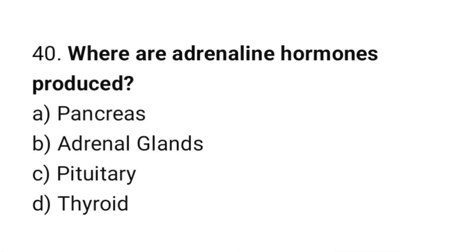Question number 40: Where are adrenaline hormones produced? The correct answer is B: Adrenal glands.